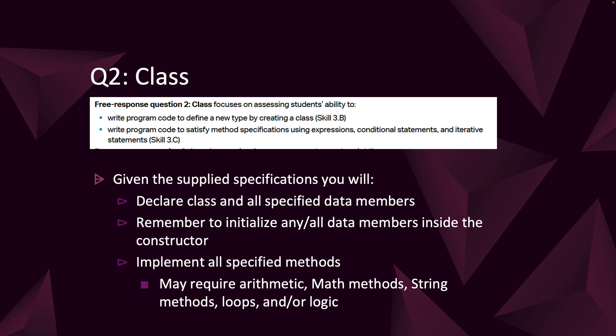Q2 is the class question. You're going to write program code to define a new type by creating a class. You're going to make a class with all specified data members and any methods it requires you to make. Remember, if you have data members that belong to that class - those fields, data members, or instance fields - they need to be initialized inside the constructor. You will need to implement all specified methods. Those methods may require arithmetic, math methods, string methods, loops, and/or logic. Make sure you identify the class you need to make, the data members it needs, and the methods that need to be a part of it.